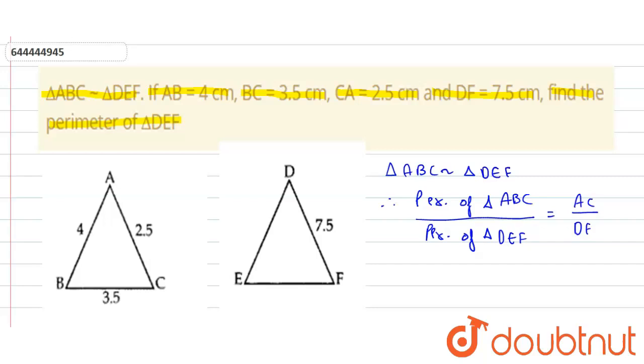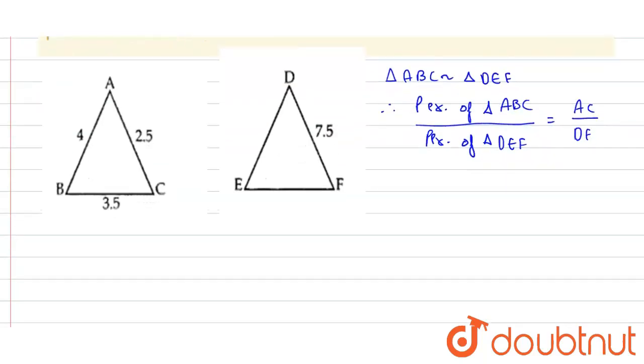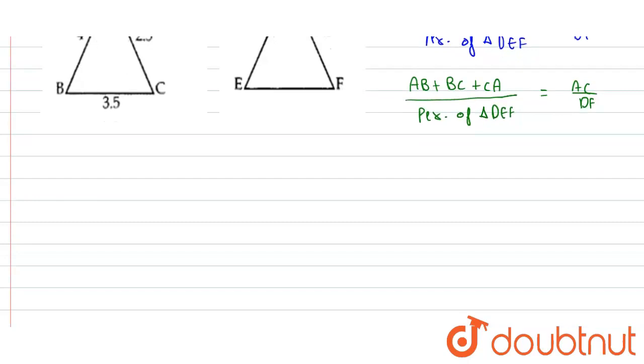The perimeter of triangle ABC is AB plus BC plus CA. So by putting value, we get AB plus BC plus CA upon perimeter of triangle DEF is equal to AC upon DF.